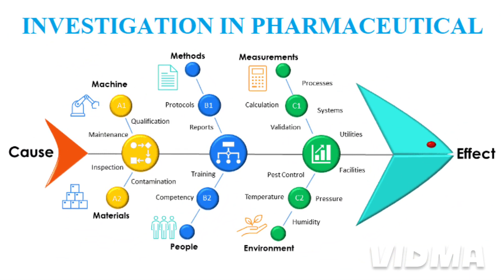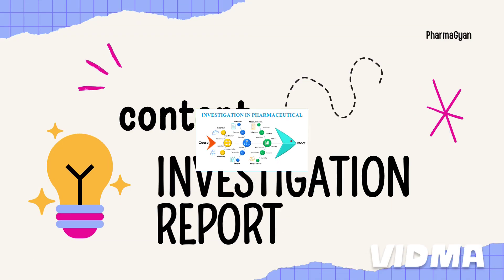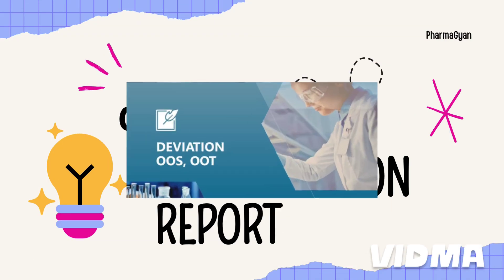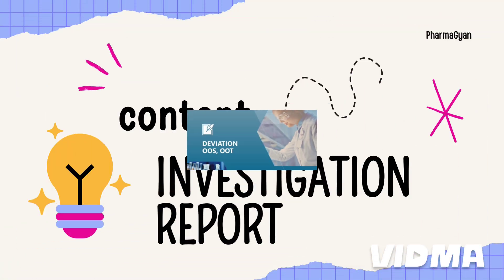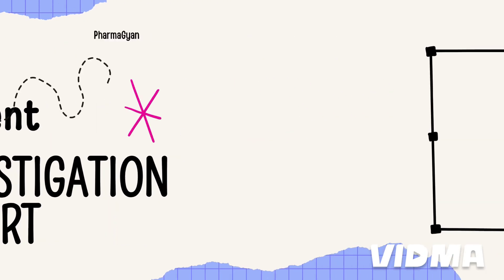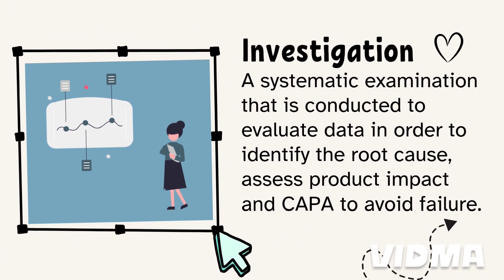It involves customer responses, audit responses, complaints, deviations, and OOS/OOT investigations. First, we will see what is an investigation. The investigation is a systematic process to inspect or examine the data, conduct the evaluation to determine the root causes.